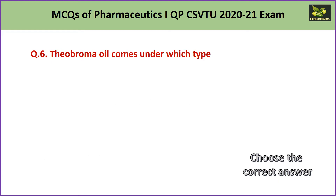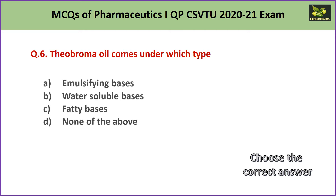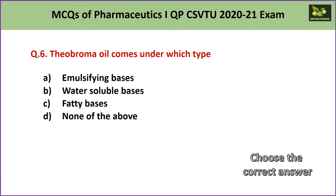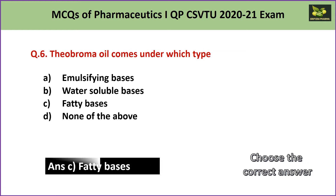Question number 6: Theobroma oil comes under which type? A. emulsifying bases, B. water soluble bases, C. fatty bases, or D. none of the above. Theobroma oil is also known as cocoa butter and is widely used as a semi-solid base, especially for ointments. Hence the answer is C — fatty base.